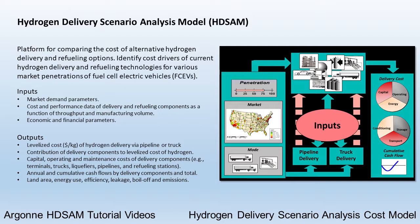Outputs include levelized cost of hydrogen delivery, capital, operating, and maintenance costs of delivery components, annual and cumulative cash flows, and environmental metrics like energy use and emissions.